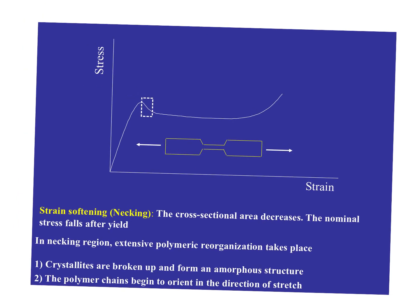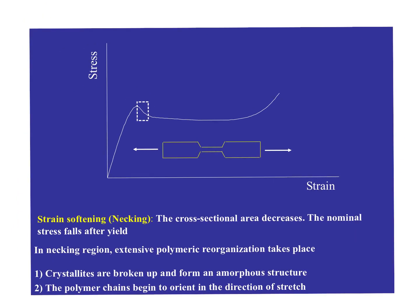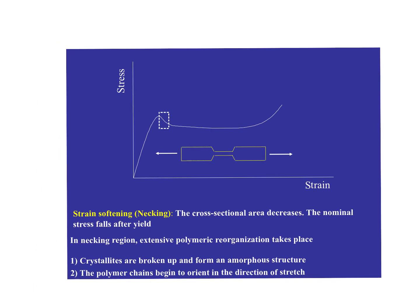Then we get to the strain softening region. We form the neck and then this region of decreased cross-sectional area. The material undergoes softening — the stress falls after yield, that's where the phrase softening comes from. It doesn't take as much stress to cause deformation. You had to work hard to get to this point, but then you don't have to work as hard beyond that point to make it extend. In the neck region, extensive polymeric reorganization has taken place.